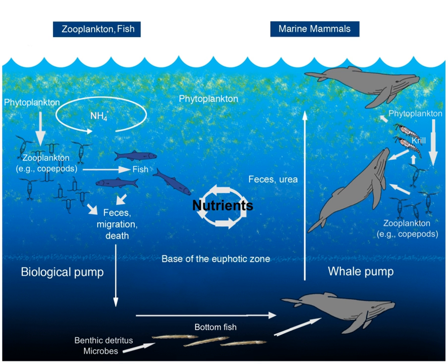These cycles include both the living biosphere and the non-living lithosphere, atmosphere, and hydrosphere. The chemicals are sometimes held for long periods of time in one place. This place is called a reservoir, which includes such things as coal deposits that are storing carbon for a long period of time. When chemicals are held for only short periods of time, they are being held in exchange pools.